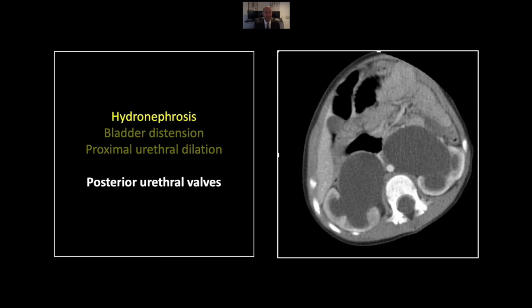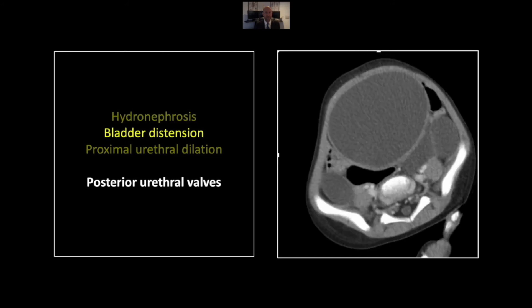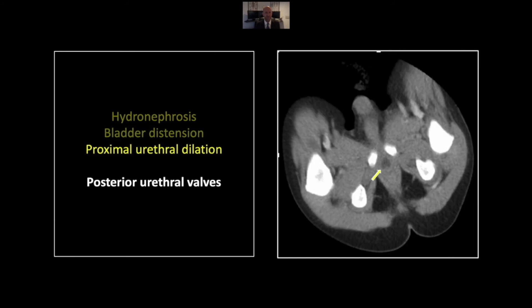Our next case is another chronic obstruction, this time related to posterior urethral valves. We have marked hydronephrosis and some cortical thinning as well, pronounced dilation of both ureters throughout the abdomen, and marked bladder distension. That bladder distension obviously gives you a clue to the fact that there is outlet obstruction here. The critical image is this next one, where you can see the proximal urethra is dilated — just upstream of the posterior urethral valves, which are causing the dynamic obstruction on urination in this patient.